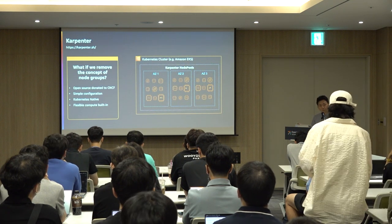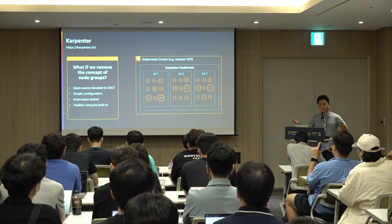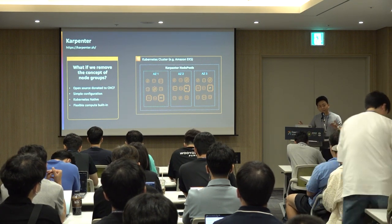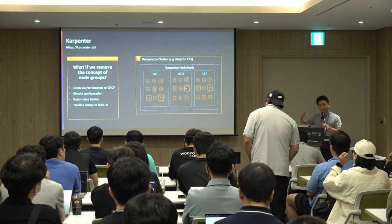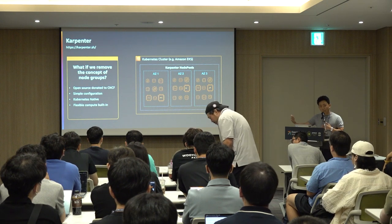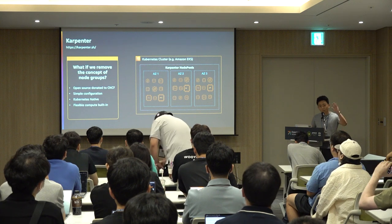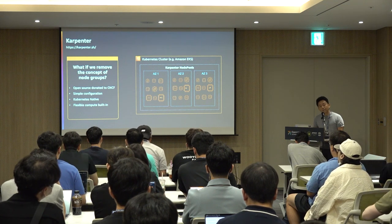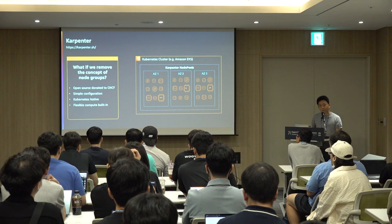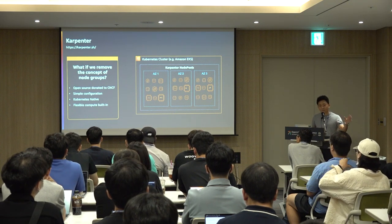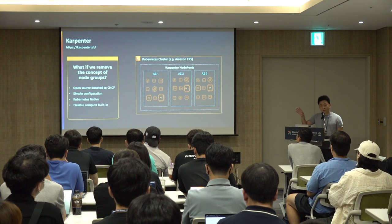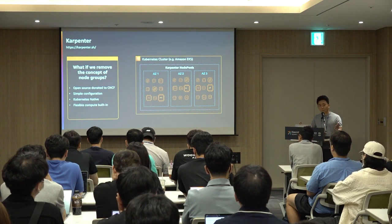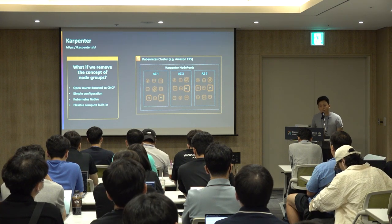Karpenter removes the concept of node groups or auto-scaling groups entirely. When there are pods that cannot be scheduled in existing capacity, Karpenter looks at the pod definition and chooses the best instance to host your pods automatically, instead of you creating different auto-scaling groups. Karpenter was recently accepted into the CNCF Kubernetes SIG autoscaling group, so it's open source and you're not locked into one environment.